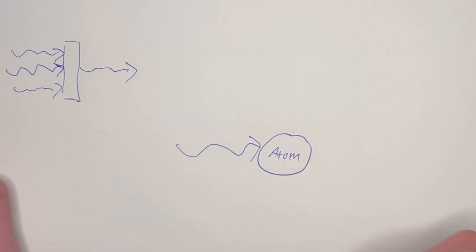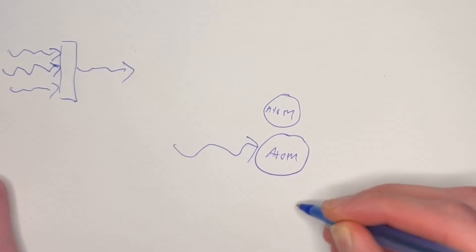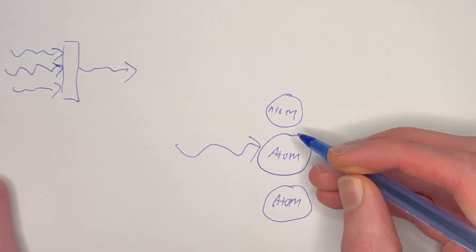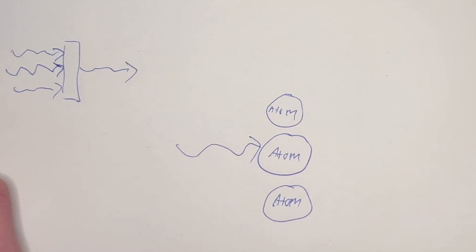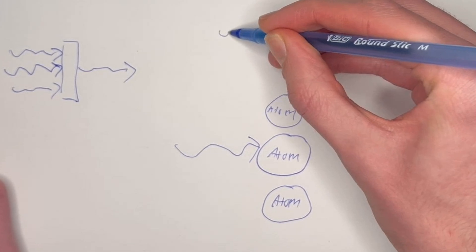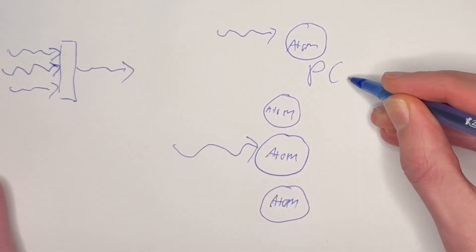The two things that we can do to make this as likely as possible are to have lots of atoms to increase the chance that our gamma ray will hit one, and we can also make it more likely that these interactions will even occur in the first place. If a gamma ray is approaching an atom what is the probability that it will actually be stopped?